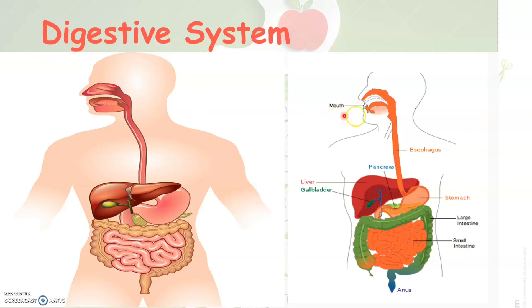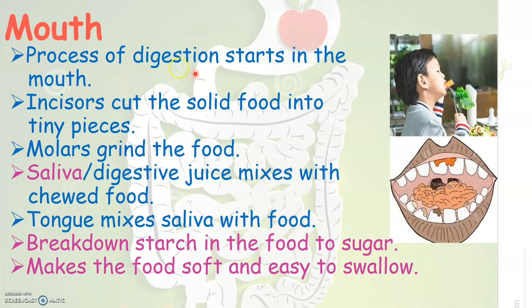Now let us see the functions of each of these organs one by one. The first one is the mouth. As soon as you keep food inside your mouth, the process of digestion starts — the process of digestion starts in the mouth itself. Incisors, otherwise called as the cutting teeth, will cut the solid food into tiny pieces. Molars, the grinding teeth present in your mouth, will grind the food that you take.